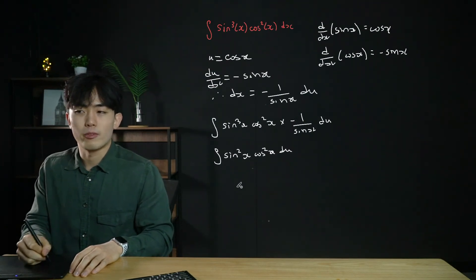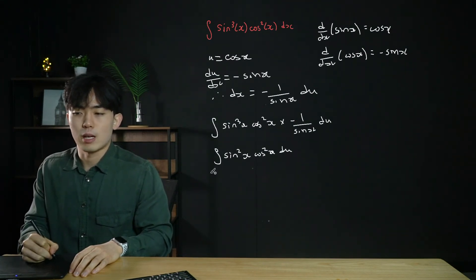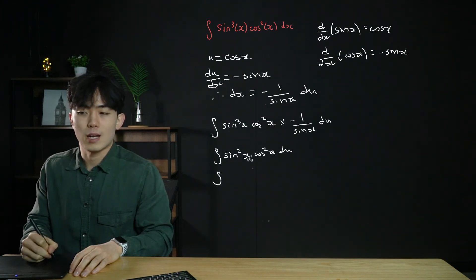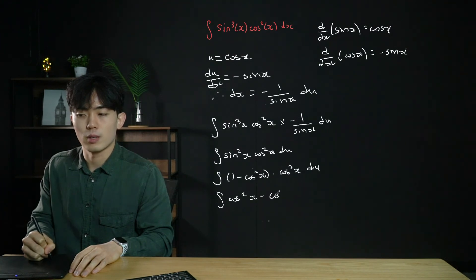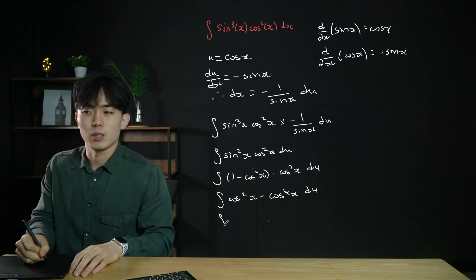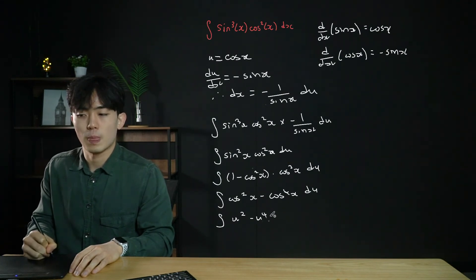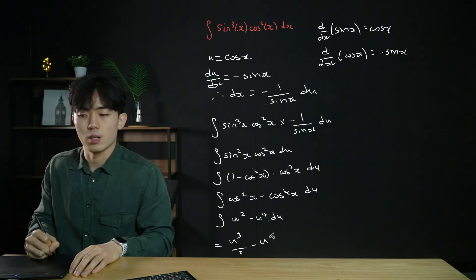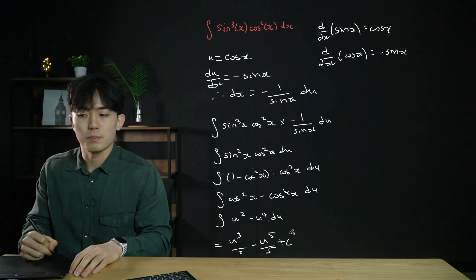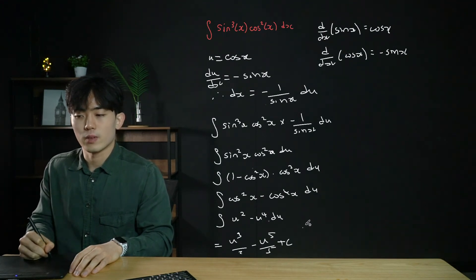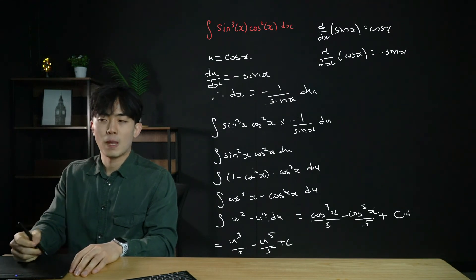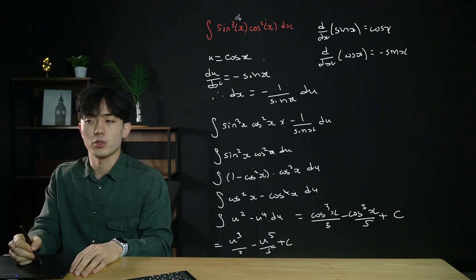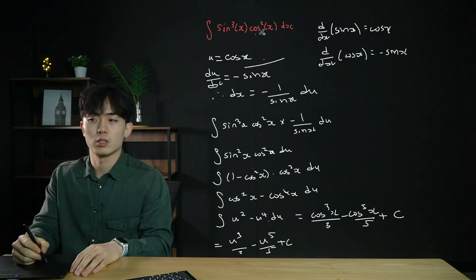Replacing cos²x with u² and sin²x with 1 minus cos²x = 1 minus u², the integral becomes (1 minus u²) · u² du, which expands to (u² minus u⁴) du. Integrating gives u³/3 minus u⁵/5 plus c. Replacing u = cos x back: cos³x/3 minus cos⁵x/5 plus c. When integrating trig by substitution, let u equal one of the two trig terms so they cancel.